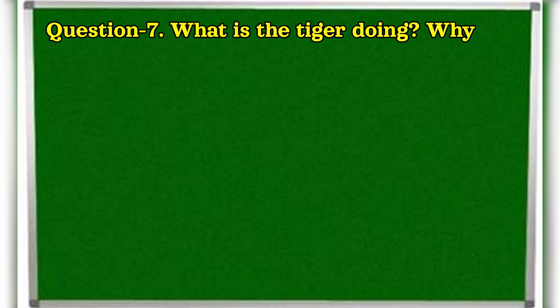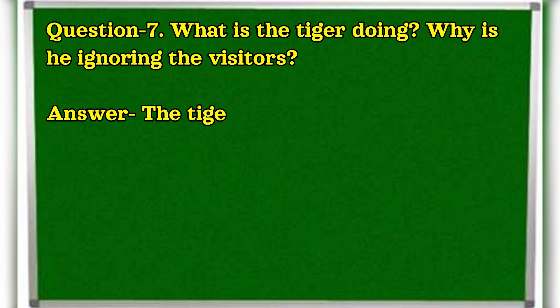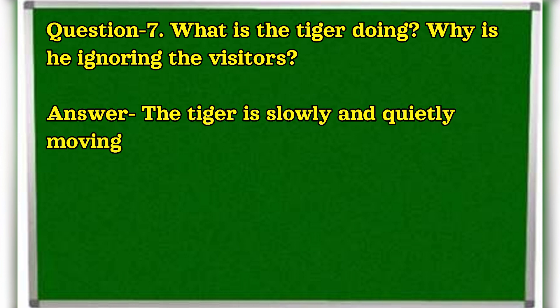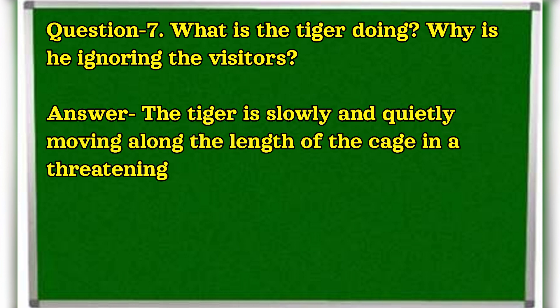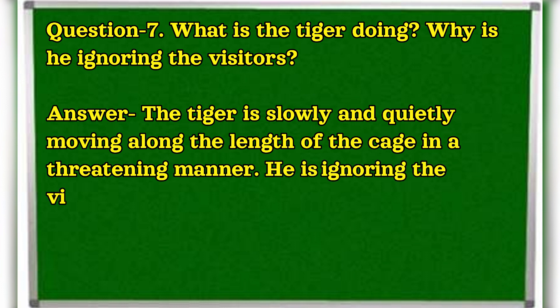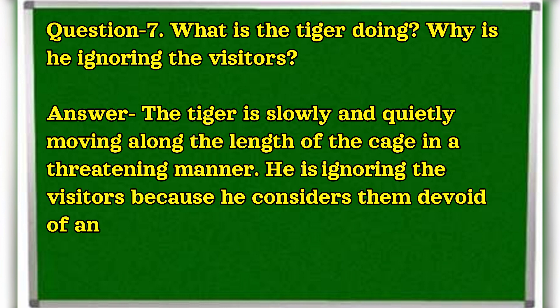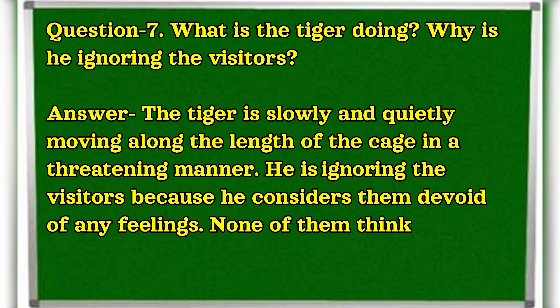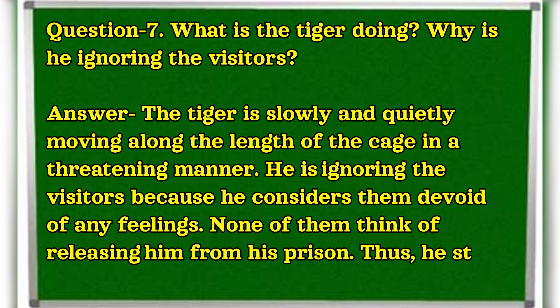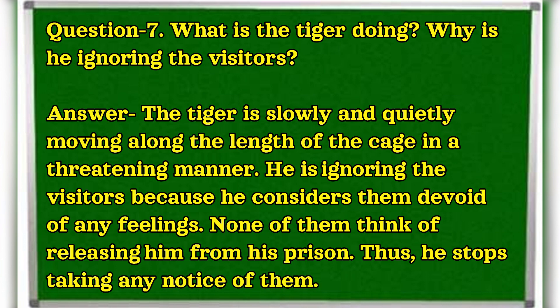Question 7. What is the tiger doing? Why is he ignoring the visitors? Answer. The tiger is slowly and quietly moving along the length of the cage in a threatening manner. He is ignoring the visitors because he considers them devoid of any feelings. None of them think of releasing him from his prison. Thus, he stops taking any notice of them.